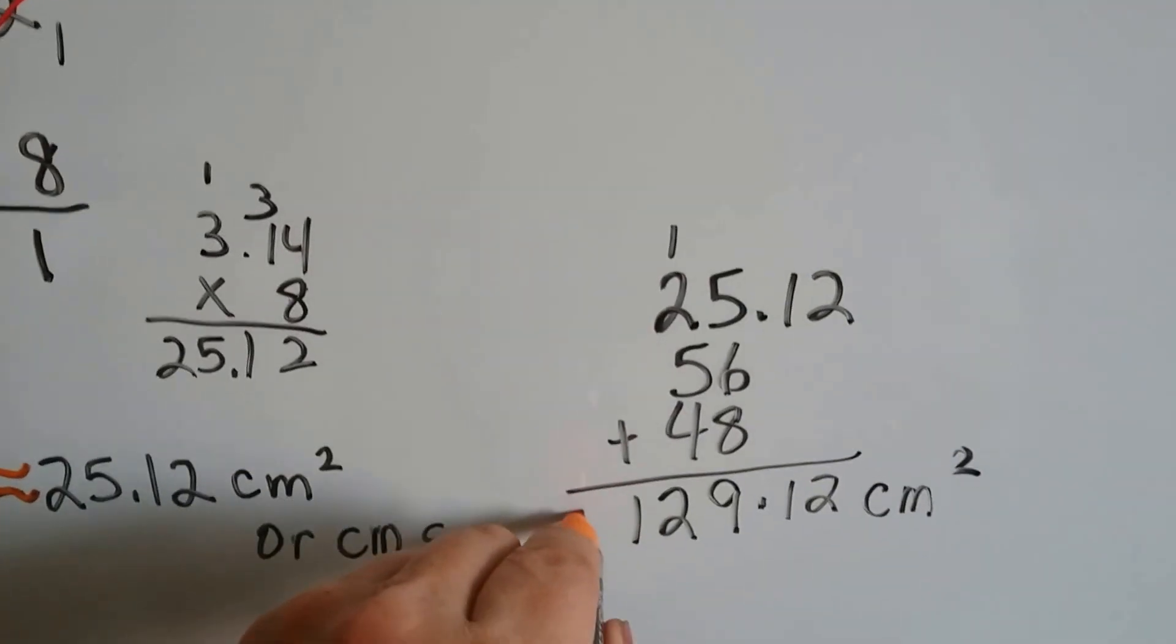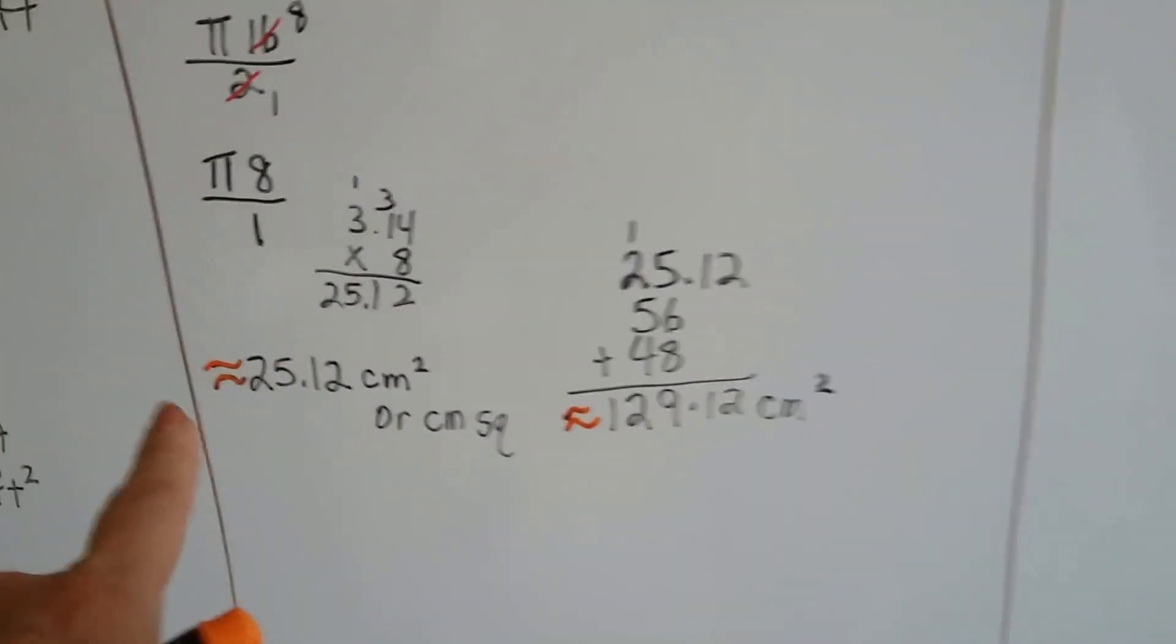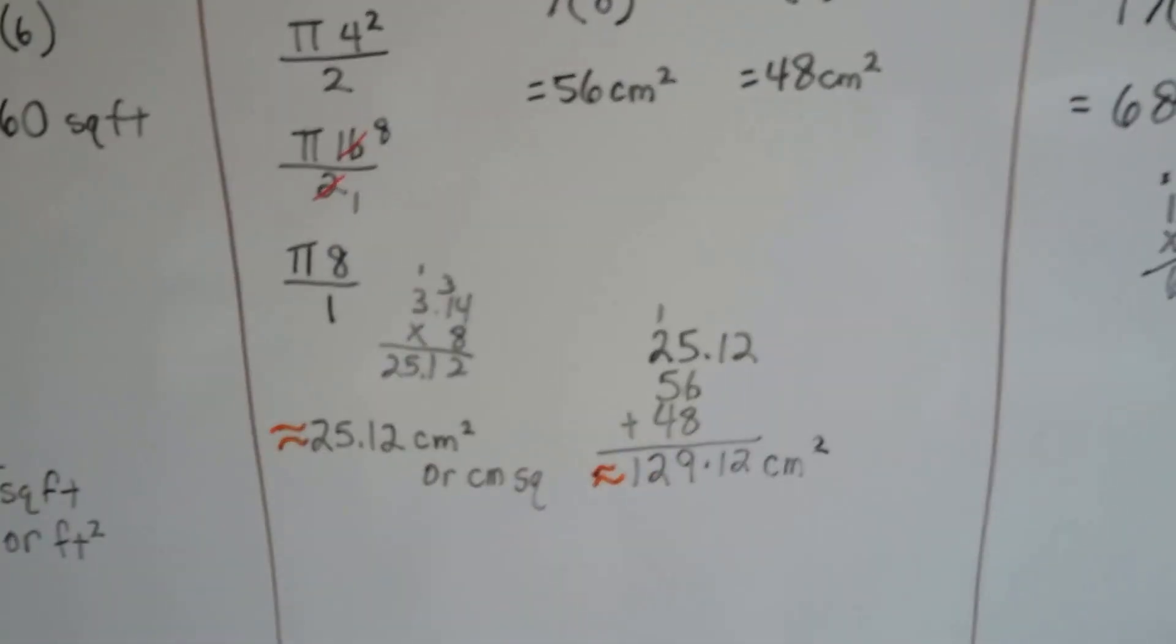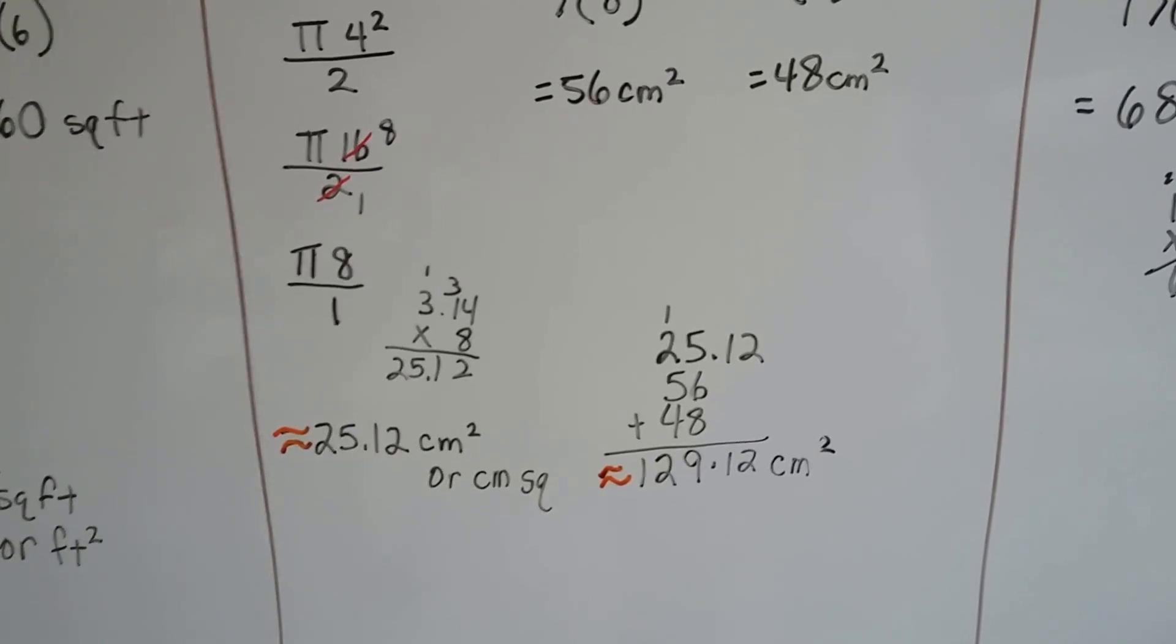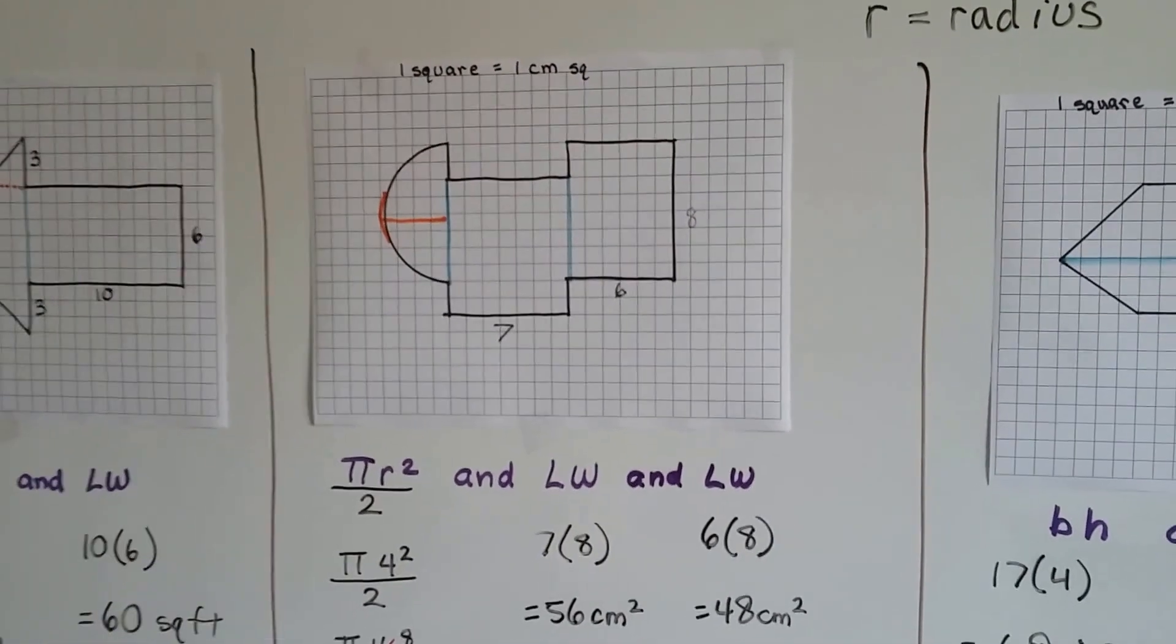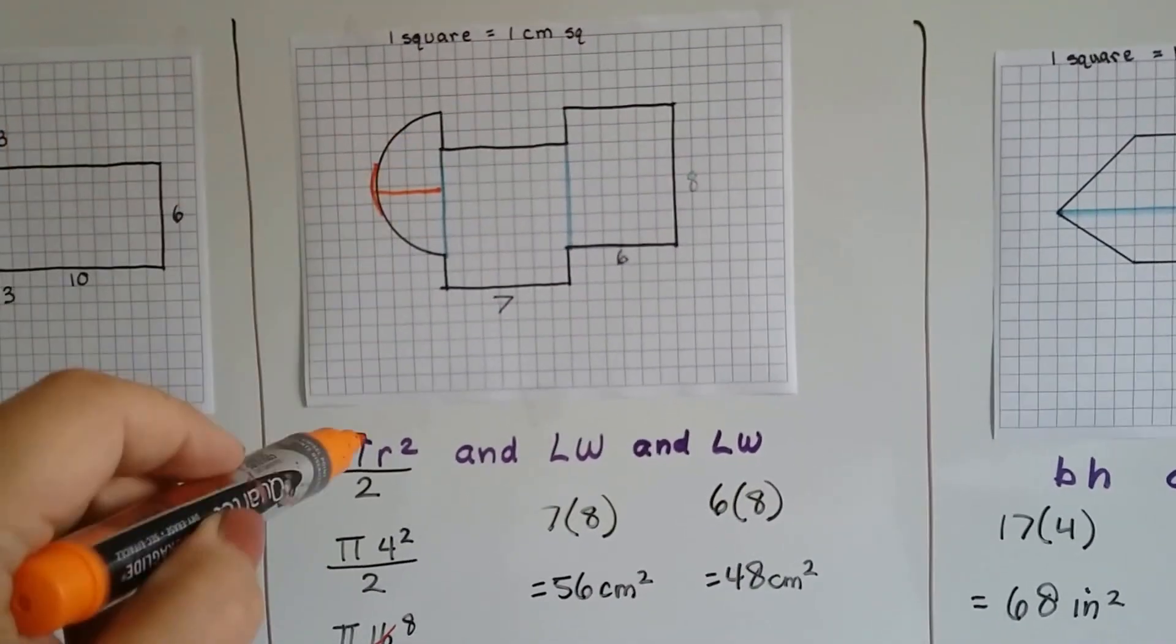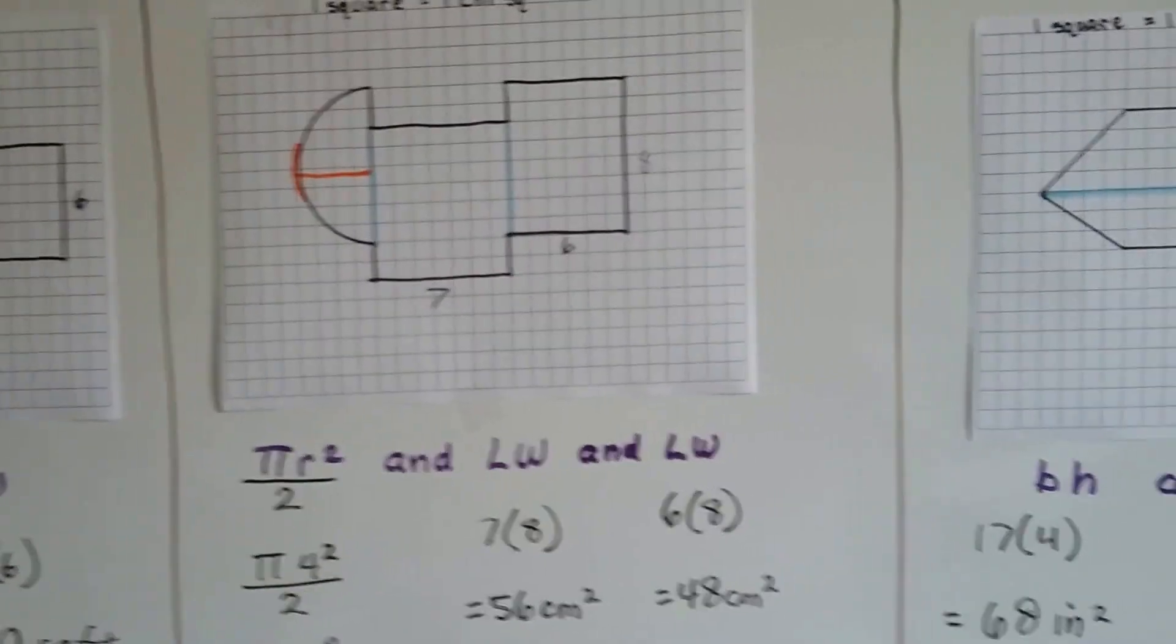So, now we just add the 25.12, the 56, and the 48, and we get 129.12 centimeters squared. And that's an approximate. Because of the pi added to it, this is an approximate 129.12 centimeters squared. So, we just broke it into three parts. We did half of the area of a circle by dividing it in two.